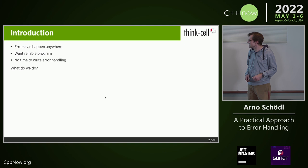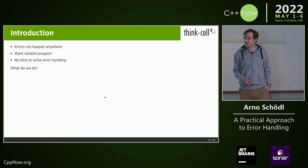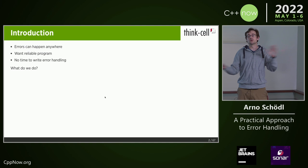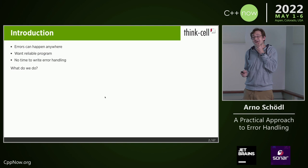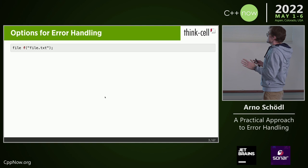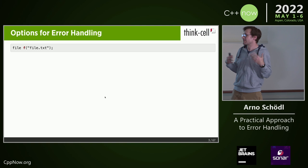Errors can happen anywhere, unfortunately. And everyone wants a very reliable program, and we absolutely have no time to write error handlers. So given that, the question is: what do we do? Before we address this, let's look at just some basics — where do these errors come about? What are we actually talking about?